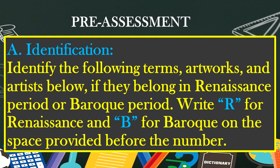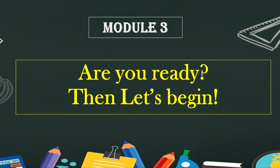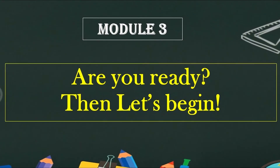Please refer to your self-learning module page 3. Pre-assessment, Part A — Identification: Identify the following terms, artworks, and artists below if they belong to the Renaissance Period or Baroque Period. Write R for Renaissance and B for Baroque on the space provided before the number. Are you ready? Then let's begin.